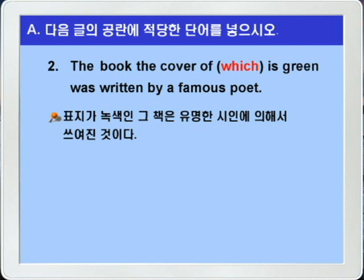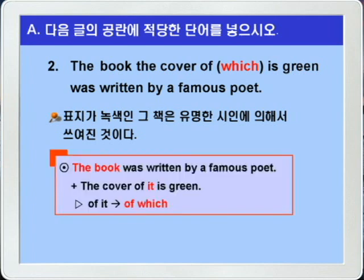이 문장도 'The book was written by a famous poet'이라는 문장과 'The cover of it is green'이라는 두 문장에서 The book과 of which의 it이 서로 공통이 되니까 The book이 사물로 선행사가 되고 of which가 되어서 'The book the cover of which is green was written by a famous poet'이 되는 것입니다. 정답을 확인해보고 3번으로 가겠습니다.